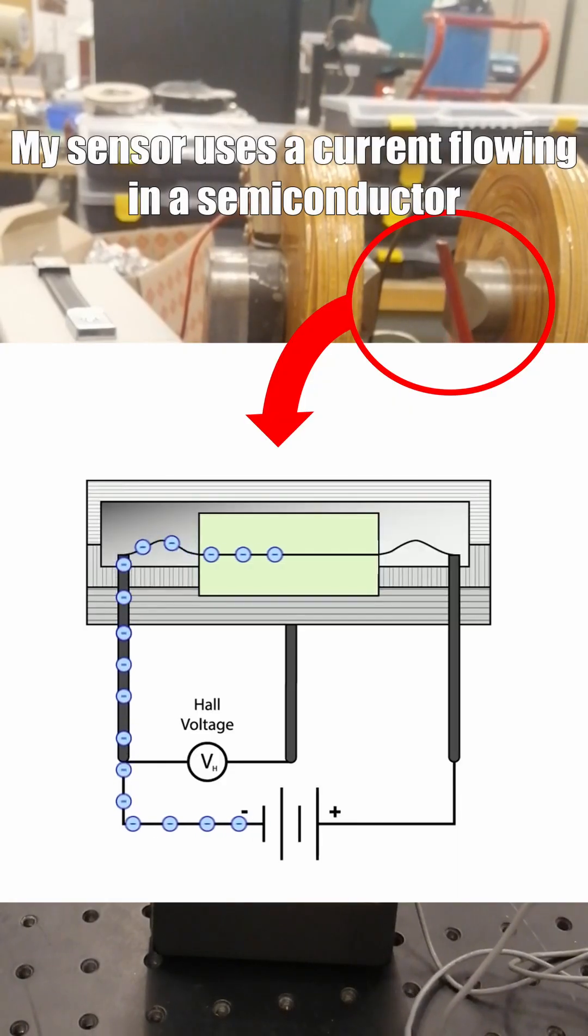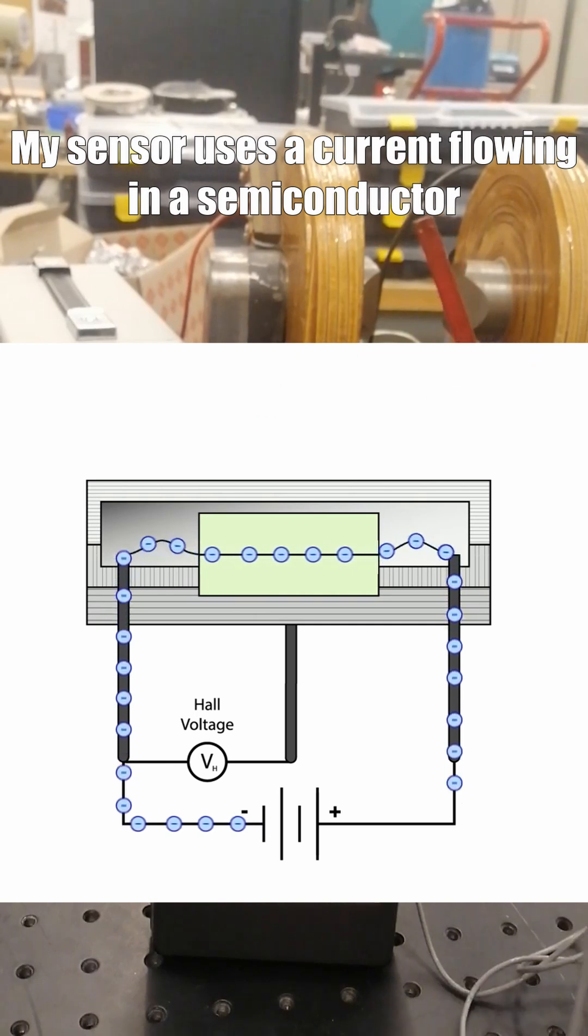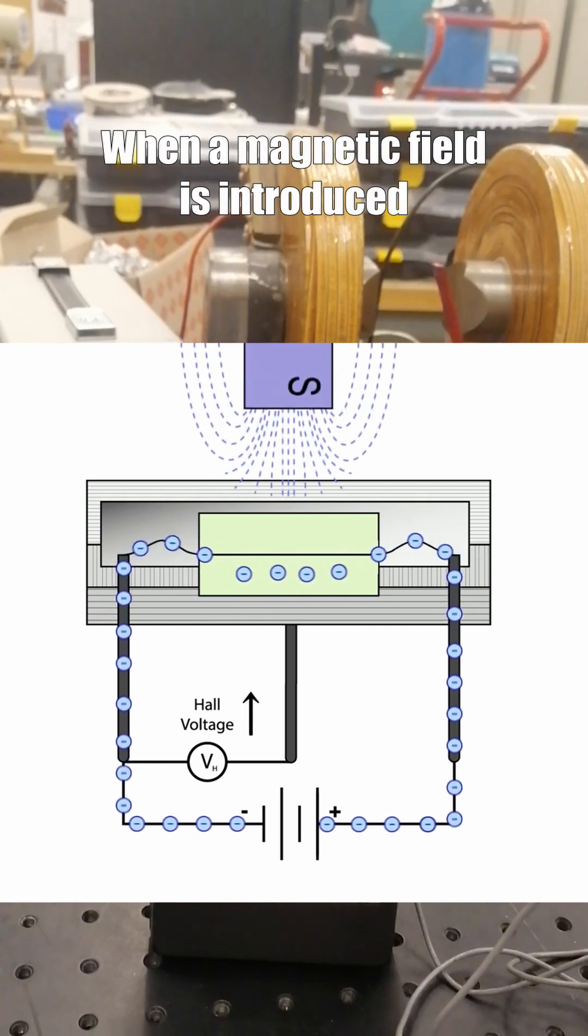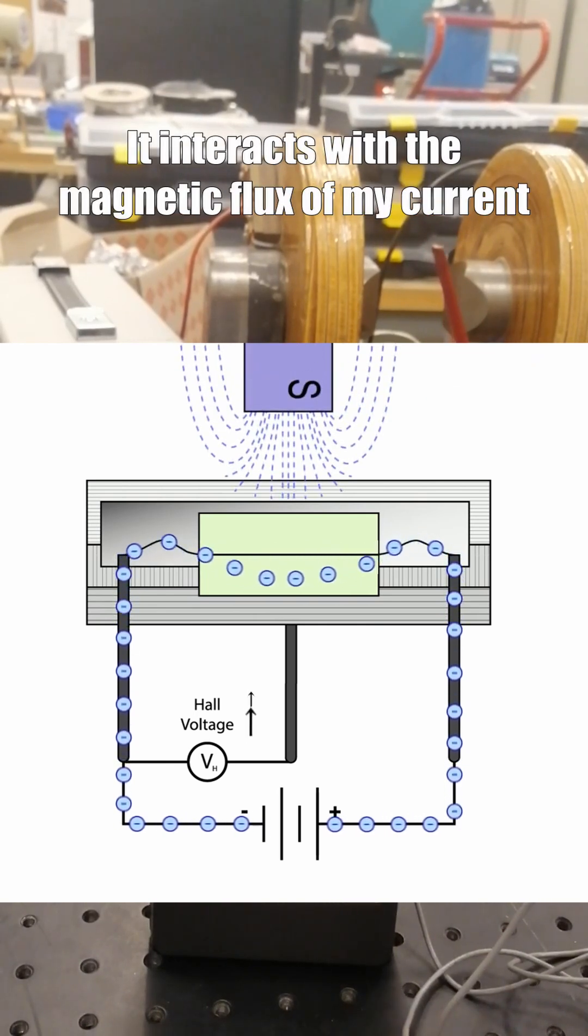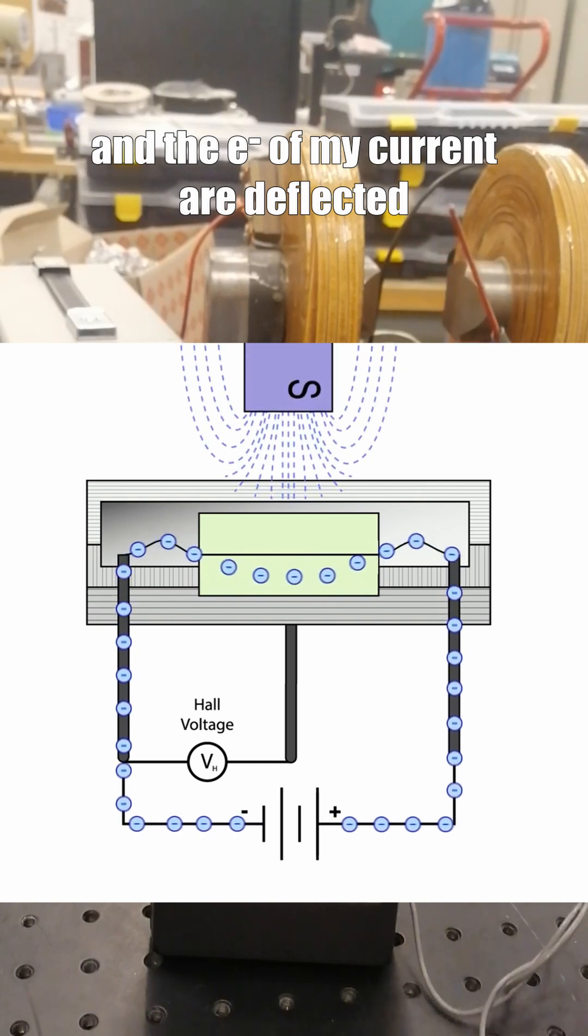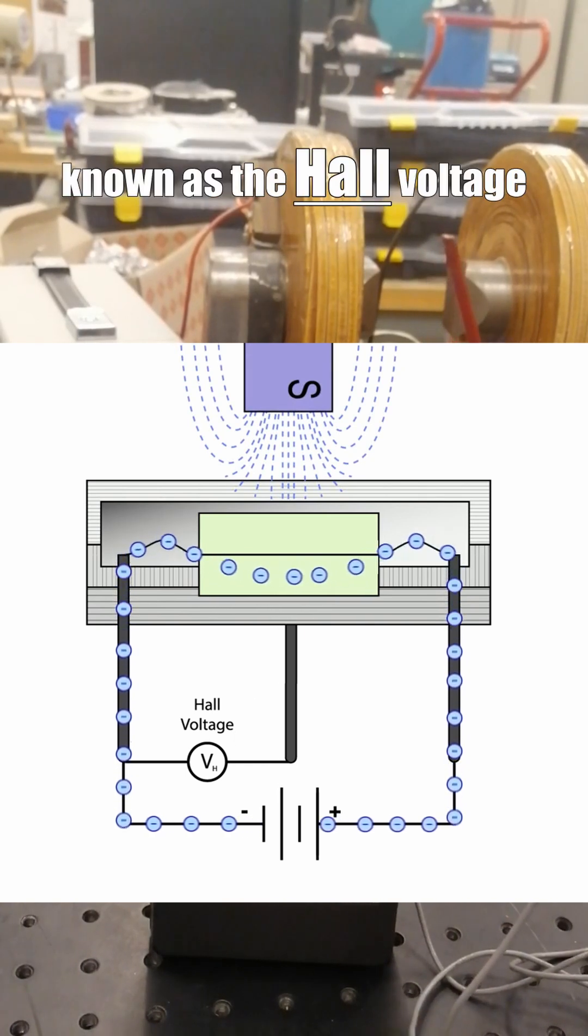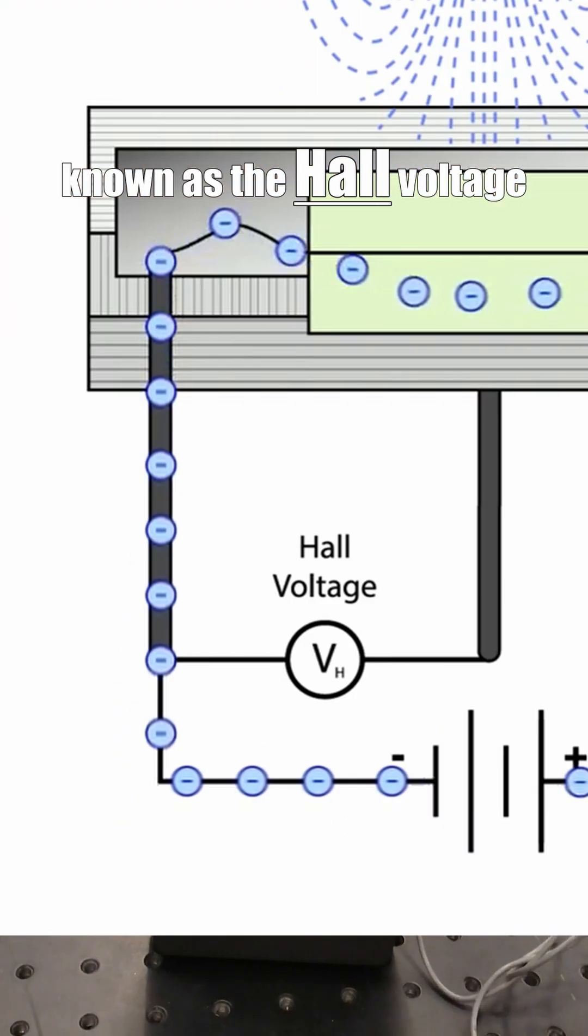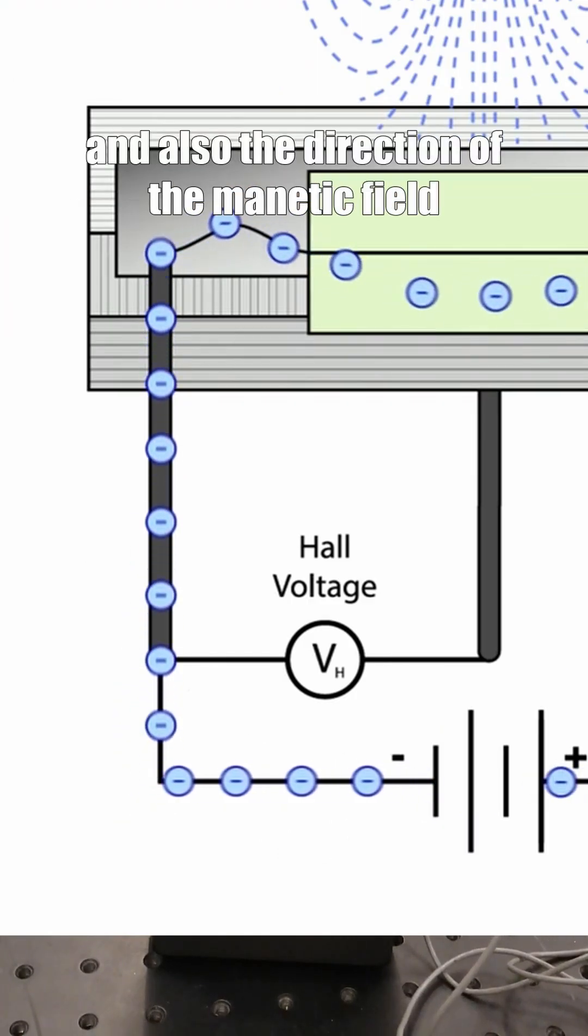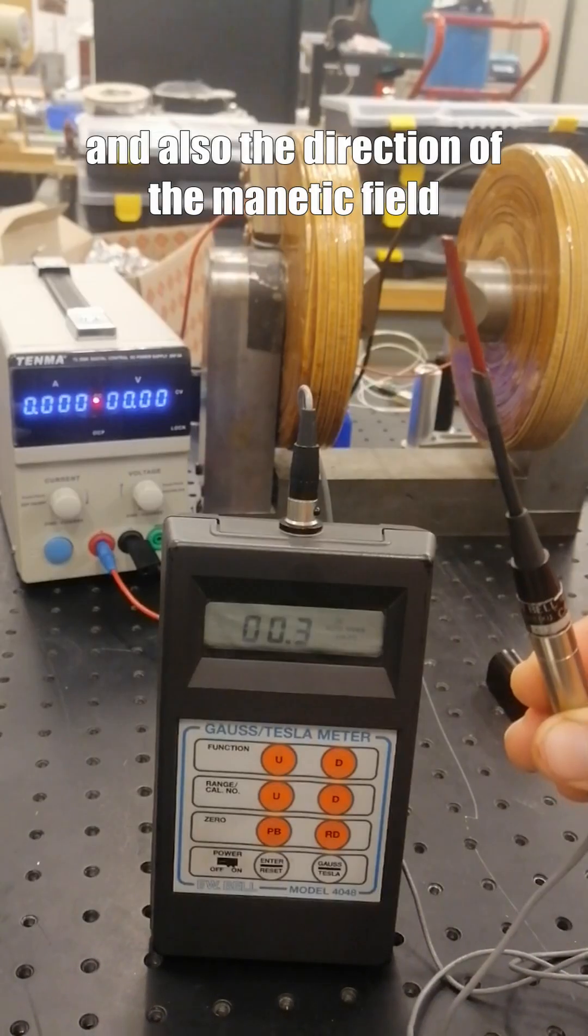My sensor uses a current flowing in a semiconductor. When a magnetic field is introduced, it interacts with the magnetic flux of my current and the electrons of my current are deflected. This creates a voltage difference in the sensor known as the Hall voltage. This voltage is linked to the intensity and also the direction of the magnetic field.